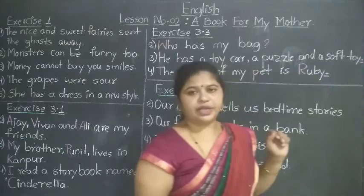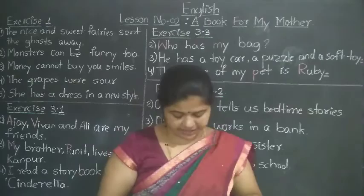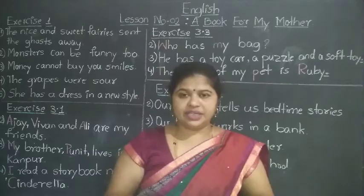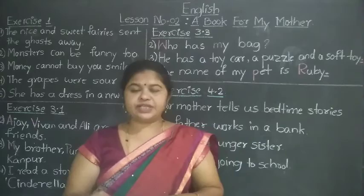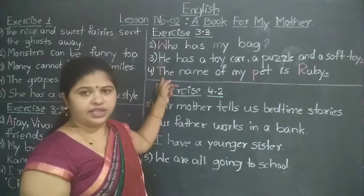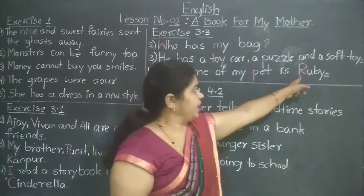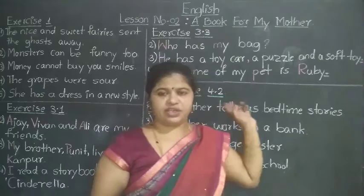Fourth: The name of my pet is Ruby. The starting word T should be capital. Pet — P is written in capital, make it small. Ruby is a special name of a pet so R should be written in capital. At the end there is a question mark — but it is a complete sentence, so put a full stop.